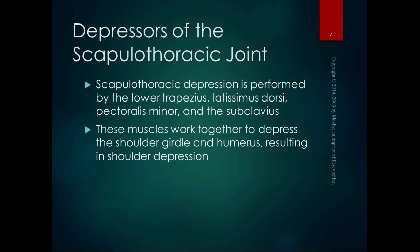Now we have to depress the scapula. Scapular depression is performed by the lower trapezius, the latissimus dorsi, pectoralis minor, and the subclavius. These muscles work together to depress the shoulder girdle and the humerus — that's where the latissimus dorsi comes in — resulting in shoulder depression.